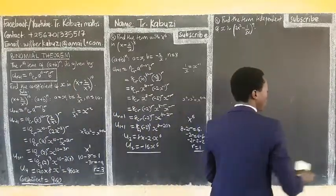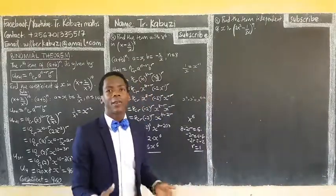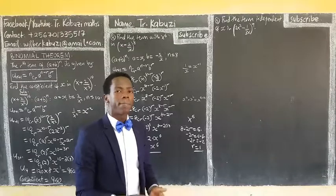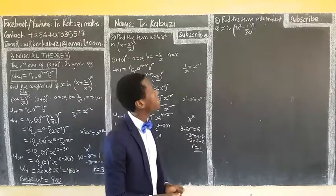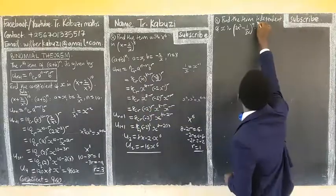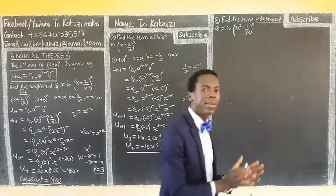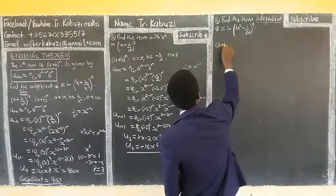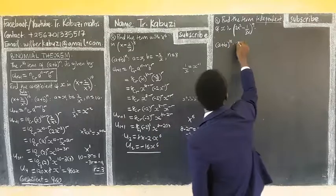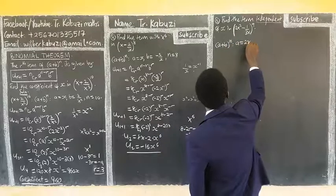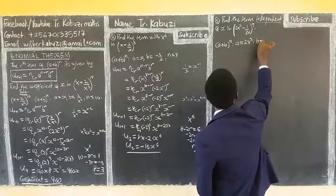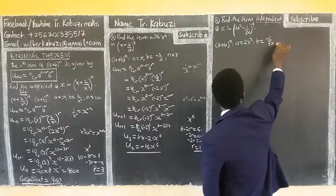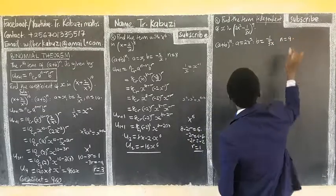Now we find the term independent of x. A term independent of x is a term without x — in other words, it is the term with x^0. Comparing (2x² - 1/3x)^9 with (a + b)^n, we get a = 2x², b = -1/3x, and n = 9.